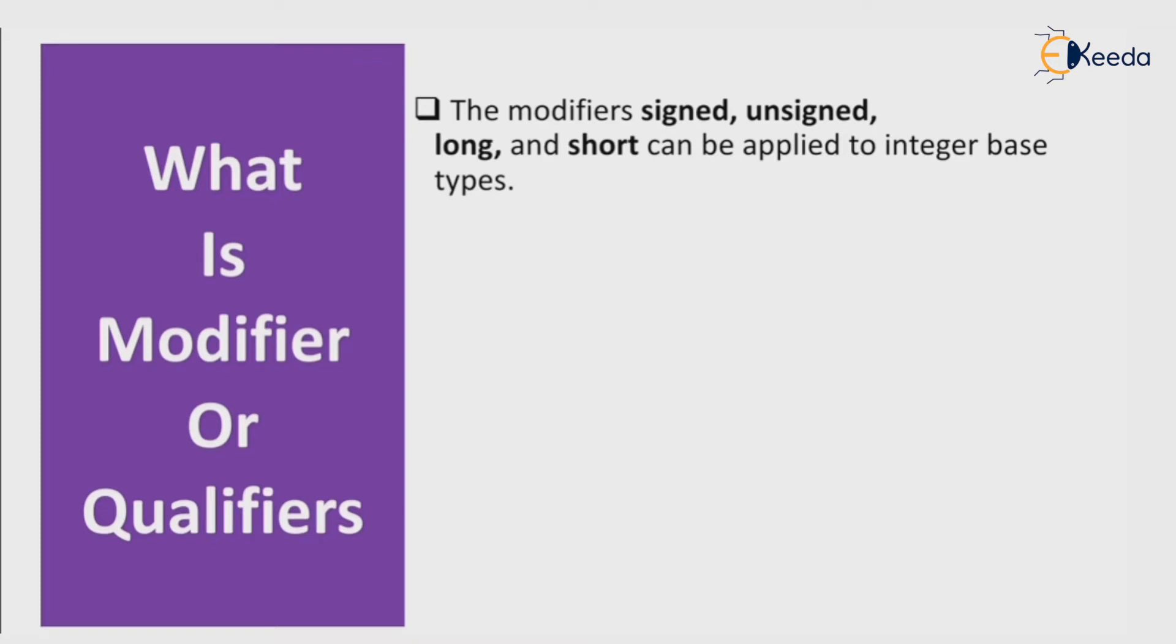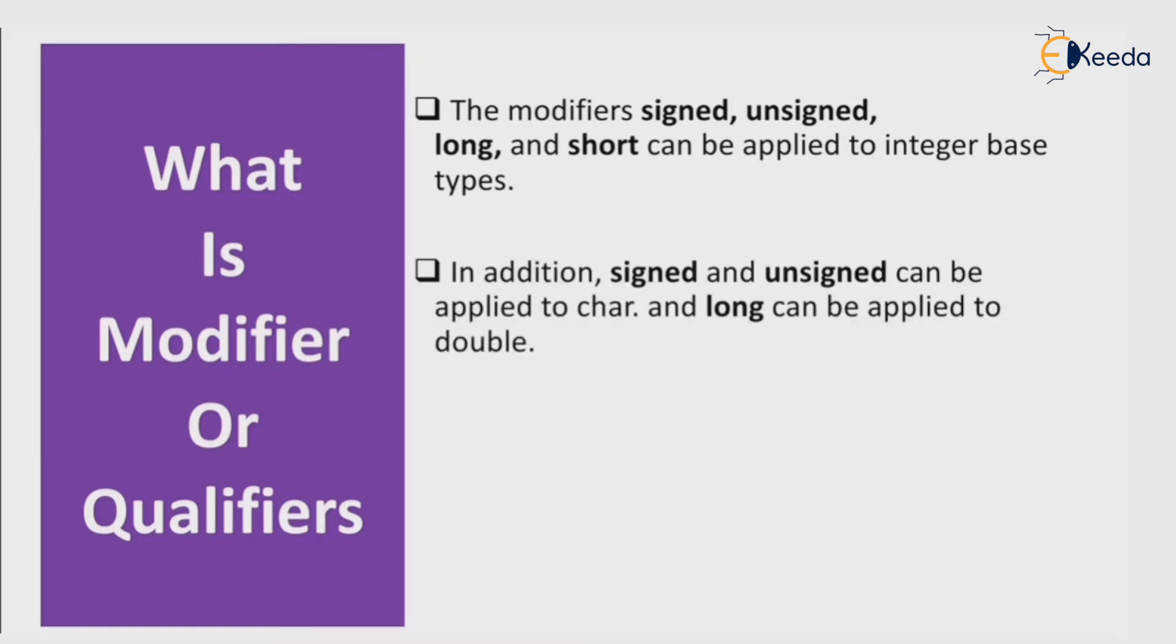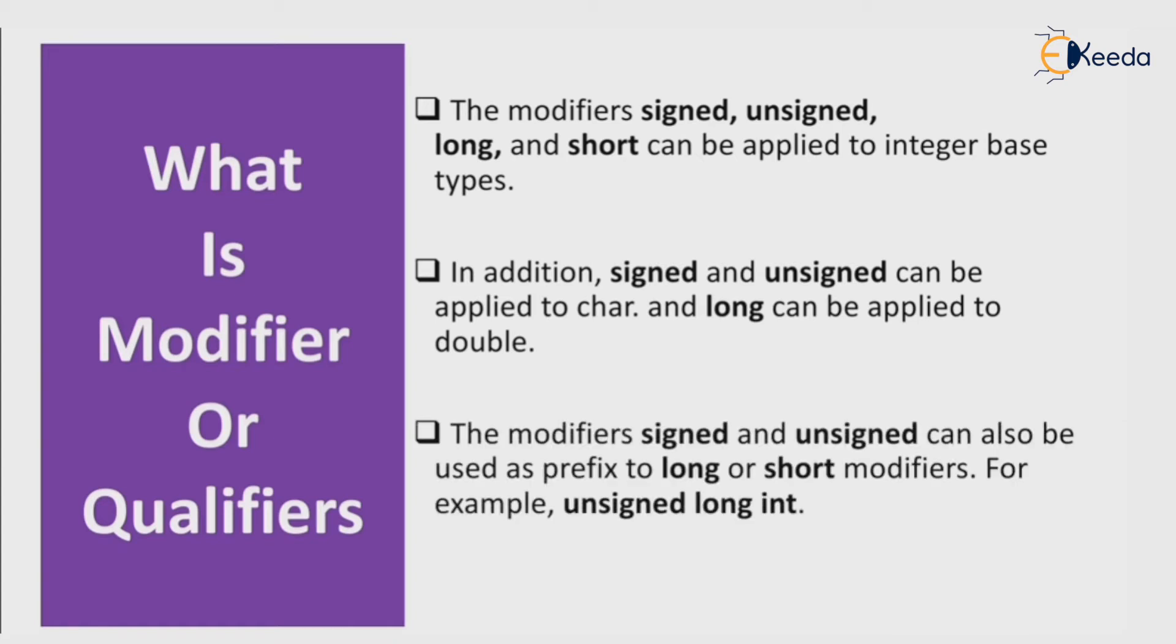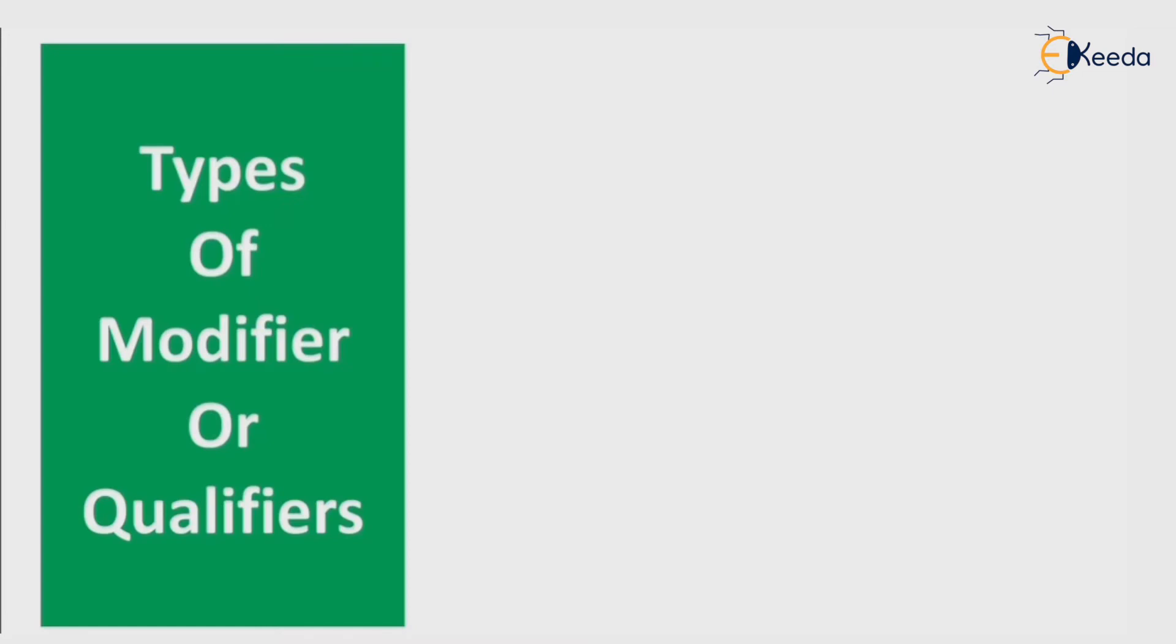The modifiers signed, unsigned, long, and short can be applied to integer based types. In addition, signed and unsigned can be applied to character, and long can be applied to double. The modifiers signed and unsigned can also be used as prefix to long or short modifiers, for example, unsigned long int.